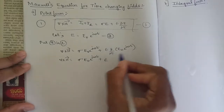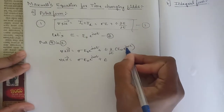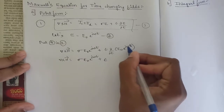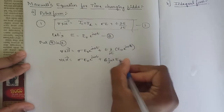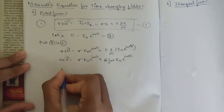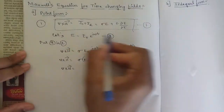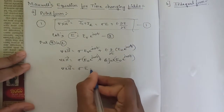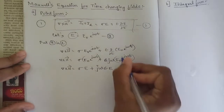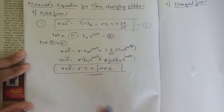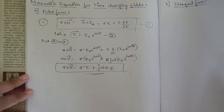We keep the σ term as is: σ·E₀·e^(jωt). For the ∂/∂t term, differentiating e^(jωt) with respect to t gives jω·e^(jωt), so the second term becomes ε·jω·E₀·e^(jωt). Replacing E₀·e^(jωt) back with E, the modified first Maxwell's equation for time-changing fields becomes: del cross H = σE + jωεE = (σ + jωε)E.